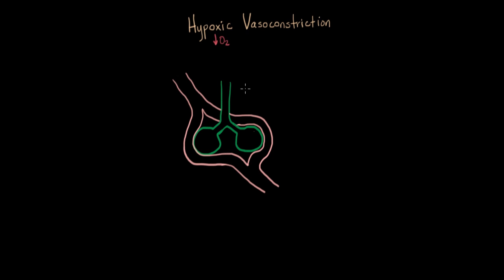The lungs' job is to carry O2, or oxygen, to our bodies. So when it's low in oxygen, it's hypoxic. And vasoconstriction is basically a structural term. If you have your vessel going like this, vasoconstriction is when they get restricted and the diameter actually decreases.